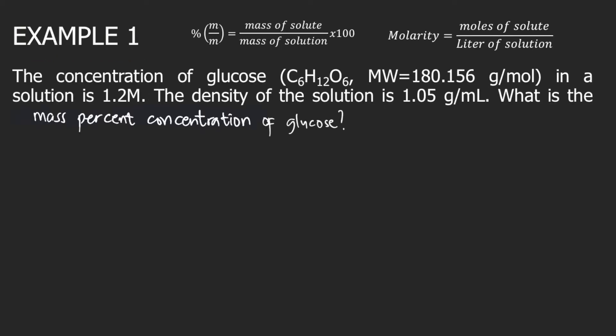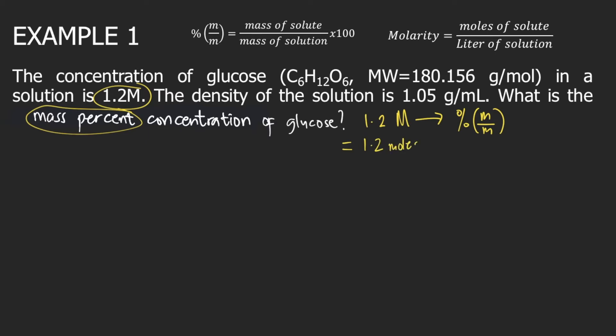Let's try example one. The concentration of glucose in a solution is 1.2 molar. The density of the solution is 1.05 grams per mL. What is the mass percent concentration of glucose? We are given the molar concentration of 1.2 molar, and we will convert this to mass percent. Remember, 1.2 molar is equivalent to 1.2 moles of glucose per one liter of solution.